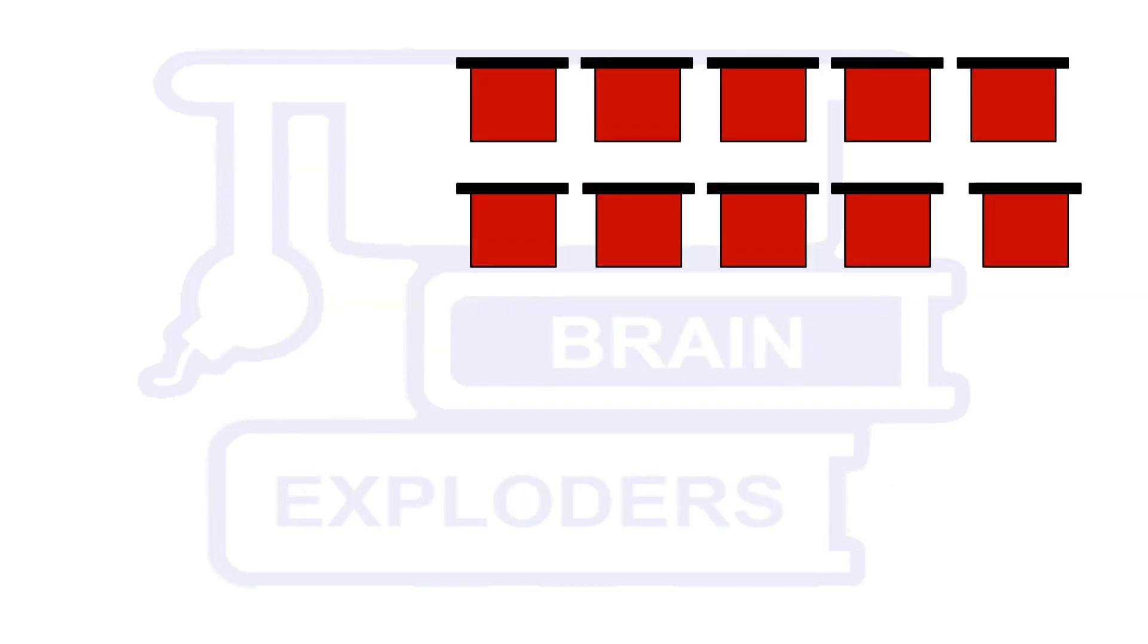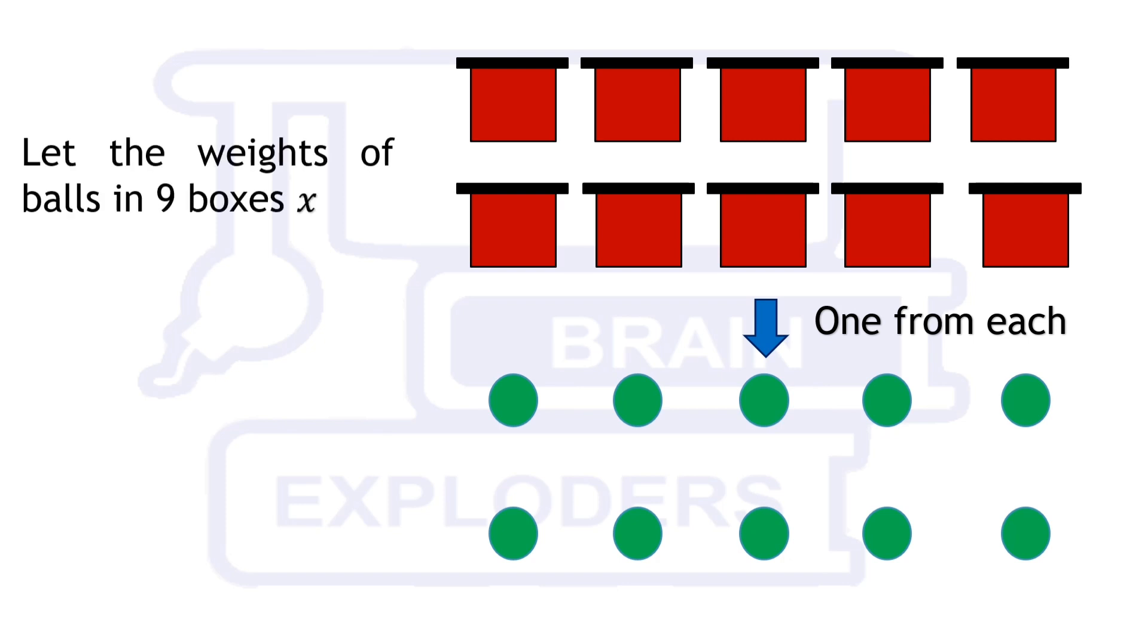Take one ball from each of the box given. Here 9 of the boxes have balls of same weight and one of these boxes has the balls of lighter weight. So let us assume that the balls in 9 boxes are of weight x and the ball in the remaining one box is 90% of x, which is 0.9x.